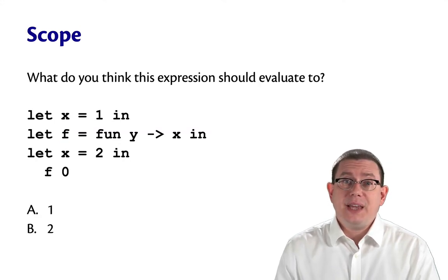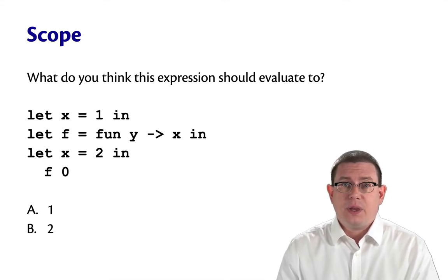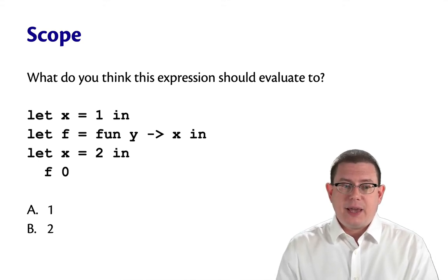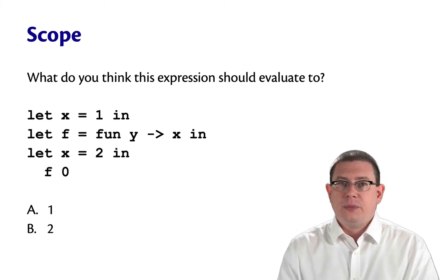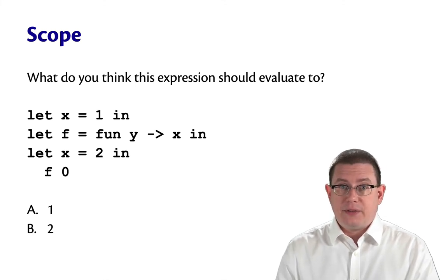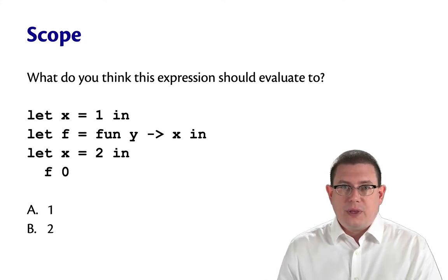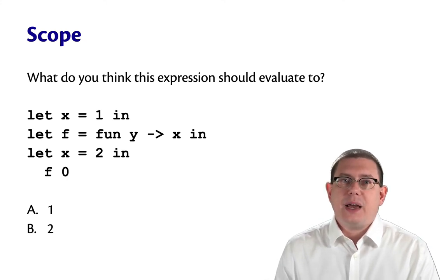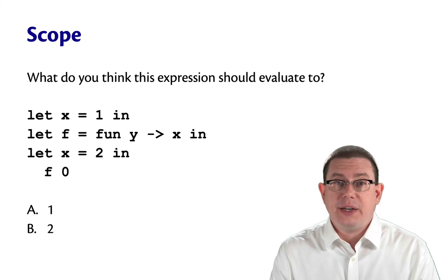If you think back to our example, the meaning of the program was highly dependent on how we handled the name of the variable x. Under dynamic scope, if we change the second binding of x to z or some other variable, it would change the meaning of the program and what it evaluates to. But under lexical scope, we are free to change that second binding of x to any other variable name, and it won't affect the result of the computation. That's what it means to say lexical scope leads to fewer surprises — you can change variable names without those kinds of surprises.